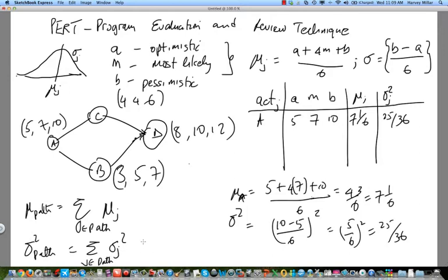So what's an example of this? If my path is A, B, D, then all I'm saying is, so let's just take path A, B, D as an example. Let's see here. A, B, D, so the mean for that path would then be mu A plus mu B plus mu D, which we would get from the table right here. And then the variance of that path would then be sigma squared A plus sigma squared B plus sigma squared D.